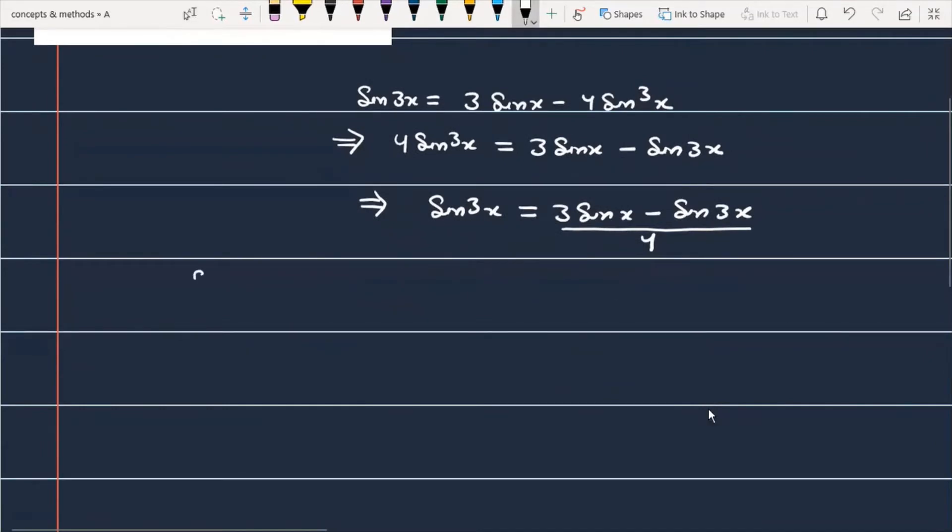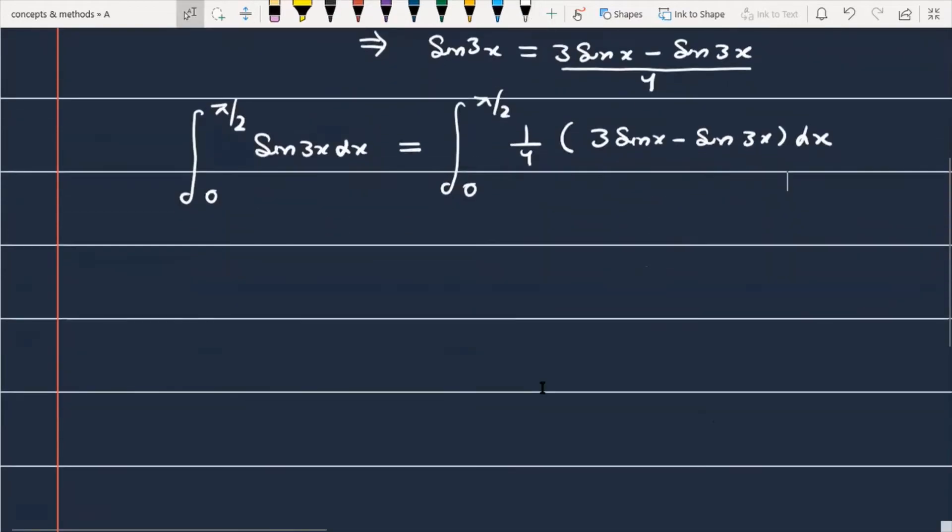Now the question is, which was 0 to π/2, sin³x dx. You can write it 0 to π/2, 1 by 4, (3 sin x minus sin 3x) dx. Now I expect that you will be able to do this further.